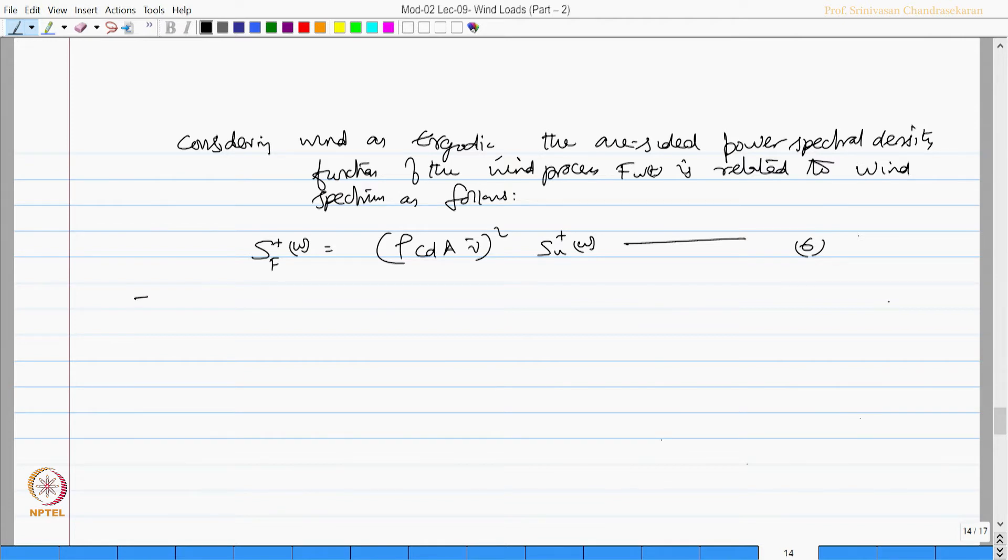We can now say I replace the gust component with aerodynamic admittance function. I can say this spectrum is now given by 4 F bar square by V bar square of aerodynamic admittance function.